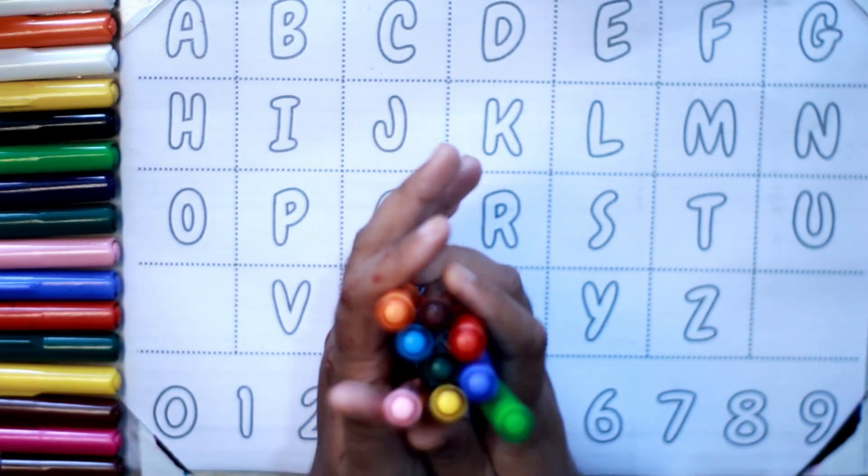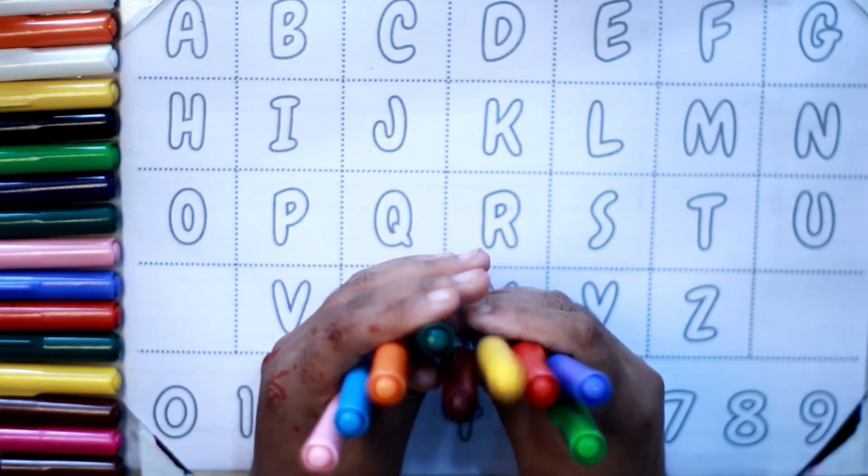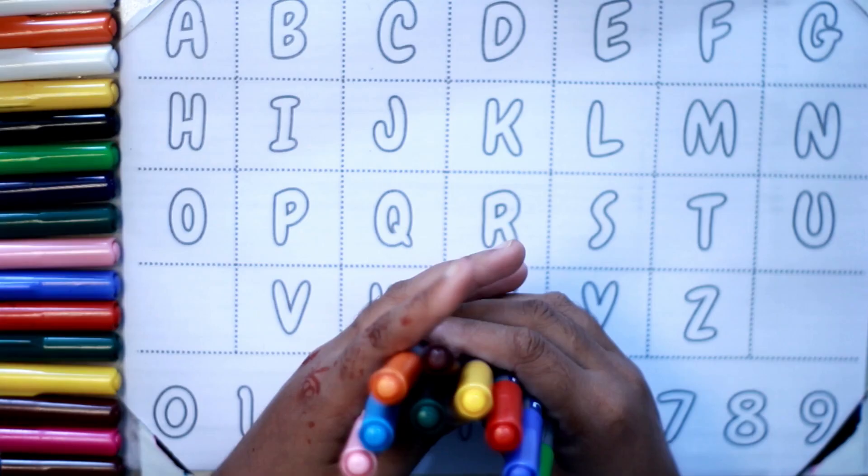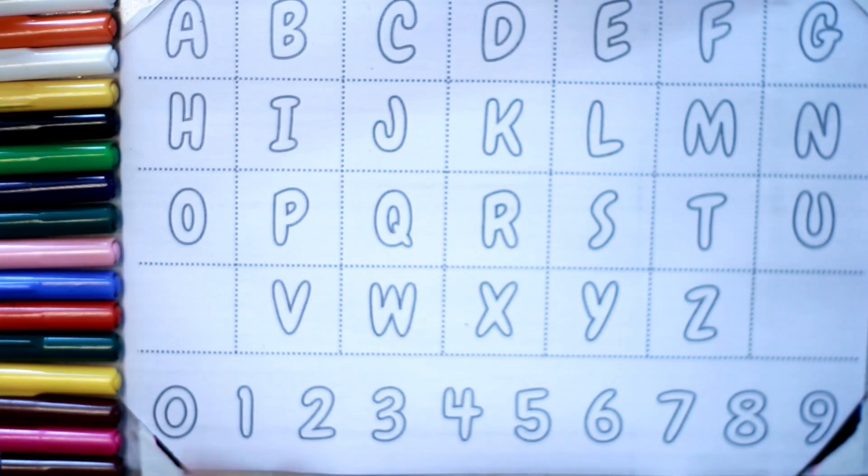Hello kids, welcome to another new video. Today we will learn English alphabet from A to Z and counting numbers 0 to 9 with your favorite YouTube kids channel.